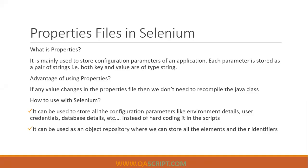We are going to learn about properties files. If you are building any automation framework, especially in Java, you will come across this useful feature called properties. It is mainly used to store your configuration parameters. There are a lot of configuration values which you'll be using in your framework, and these values could be made configurable by putting them in the properties files. Each parameter is stored as a key-value pair, where both the key and value are of type String.